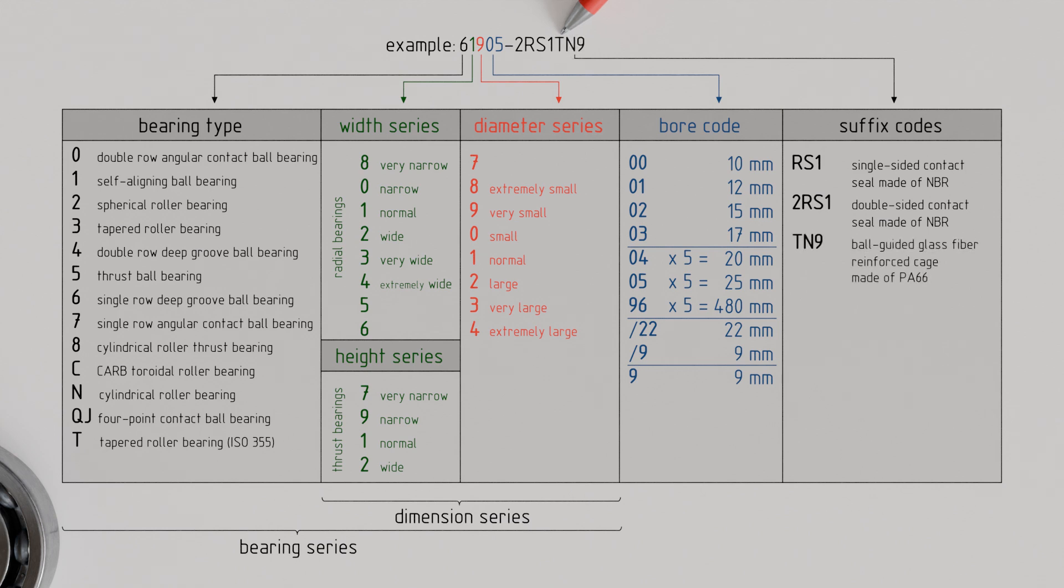Additional codes may follow in the designation. For example, the combination TN9 stands for a ball-guided, glass-fiber-reinforced cage made of polyamide 66.